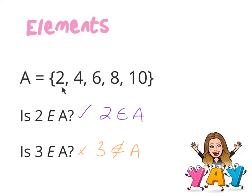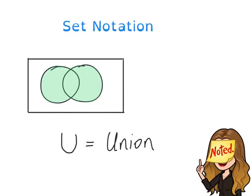And an element is the number of objects within a set. Now we have union, and union means everything in A and everything in B. So each of these sets would be labeled A and B, and union means both.